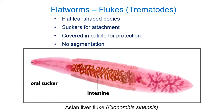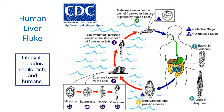Let's move on to flukes, or trematodes. Trematodes are flatworms with a flat leaf-like shape. They're more complex than tapeworms — they have organ systems including a digestive system, and they have localized ovaries and testes rather than segmentation. They're also surrounded by a cuticle that helps protect them from the immune system. Flukes can differ greatly in appearance, their preference for host species, and what part of the body they inhabit.